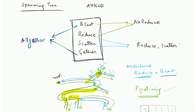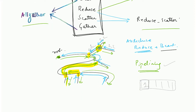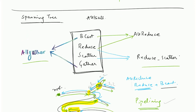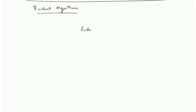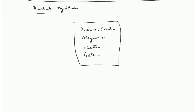Reduce-scatter and all-gather can similarly be implemented on the spanning tree. The second family of approaches is called the bucket algorithms, where the building blocks are reduce-scatter, all-gather, scatter, and gather.